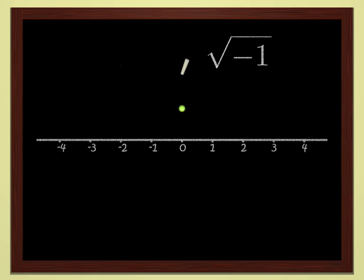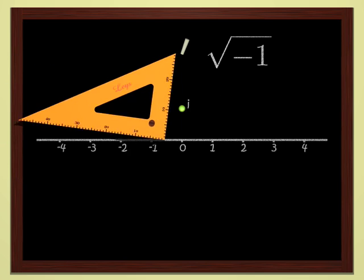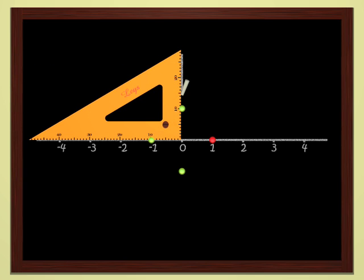Because this construction is a bit strange, we call this point, the square root of negative one, an imaginary number, and label it i. But, once we have the courage to leave the line, everything else is easy.